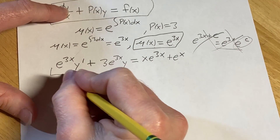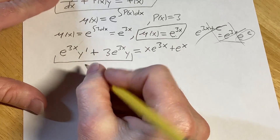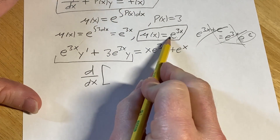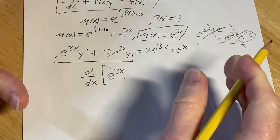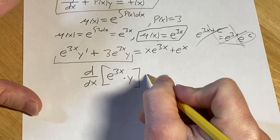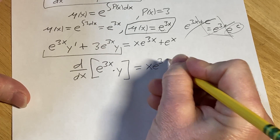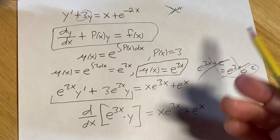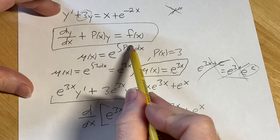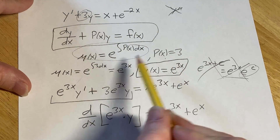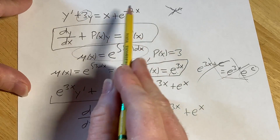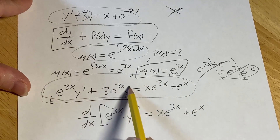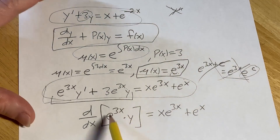All of the left-hand side magically becomes the derivative with respect to x of your integrating factor times the function you're solving for — so d/dx of (e to the 3x · y). The right-hand side stays the same: x·e to the 3x plus e to the x. This process of solving a first order linear DE involves finding the integrating factor, identifying big P, computing it, multiplying the entire equation by it, and arriving at this form.